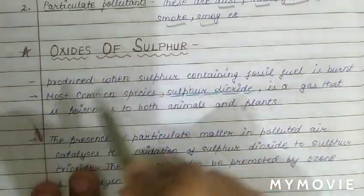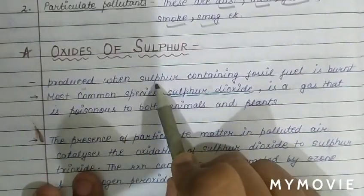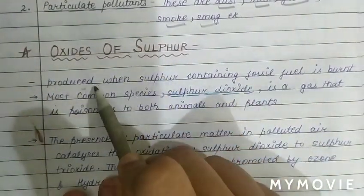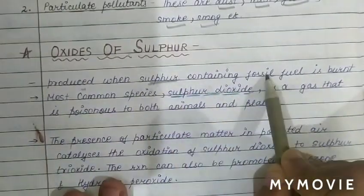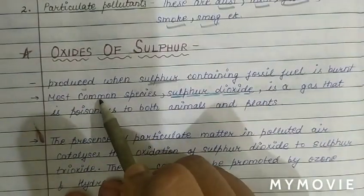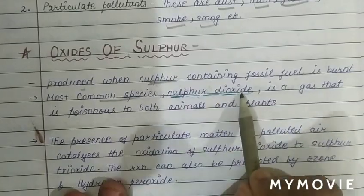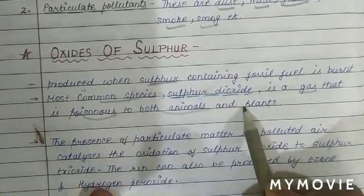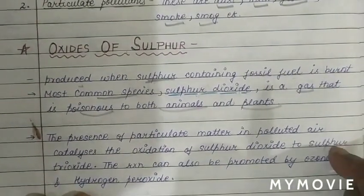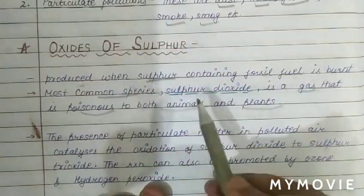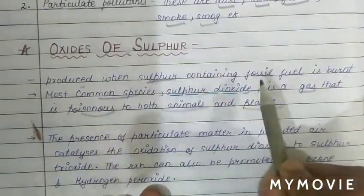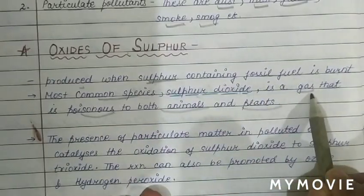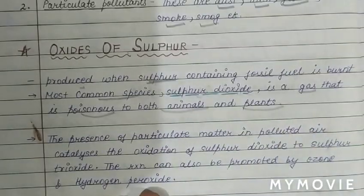The oxides of sulfur are produced when sulfur-containing fossil fuel is burned. The most common oxide of sulfur is sulfur dioxide, which is in gaseous form and is poisonous to both animals and plants.